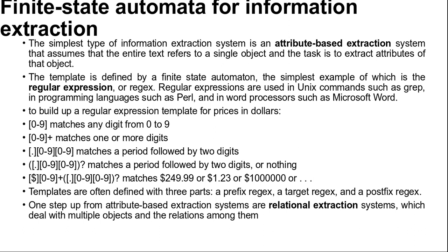If a regular expression for an attribute matches the text exactly once, we can pull out the portion of the text that is the value of the attribute. If there is no match, we can give a default value or leave the attribute missing. If there are several matches, we need a process for choosing among them. One strategy is to have several templates for each attribute ordered by priority — for example, the top priority template for price might look for the prefix 'our price', then 'price', then empty prefix. Another strategy is to take the lowest price within 50% of the highest price, selecting $78 from 'list price $99, special sell price $78, shipping $3'.